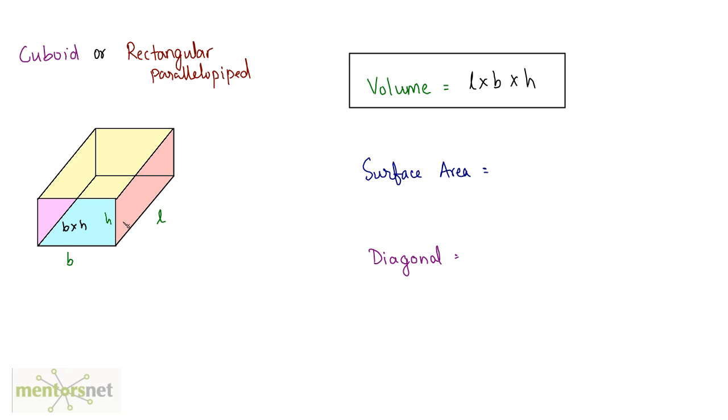What will be the area of this surface? It would be B times H because it's a rectangle. What will be the area of this surface? The area of this surface will be H times L. And the area of this top surface will be B times L because this is B and this is L.